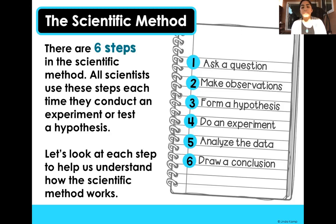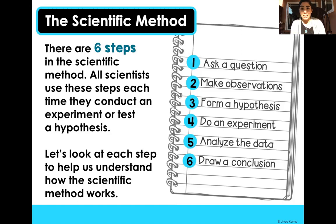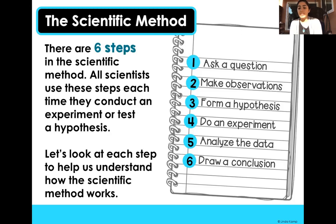Number three, we have to form a hypothesis. I'll go through this quickly and then we'll go into more detail. We form a hypothesis. Number four, we do an experiment — we actually conduct an experiment. Number five, we analyze the data. Number six, we draw a conclusion.